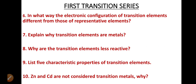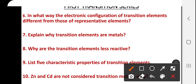The next question: in what way is the electronic configuration of transition elements different from those of representative elements? The electronic configuration of transition elements definitely differs from those of representative elements. Representative elements are those presented in the S-block and P-block series.